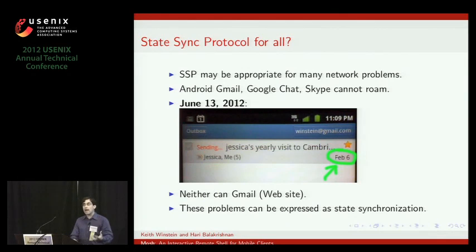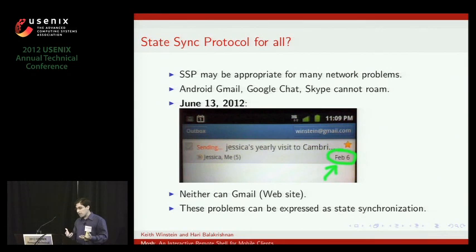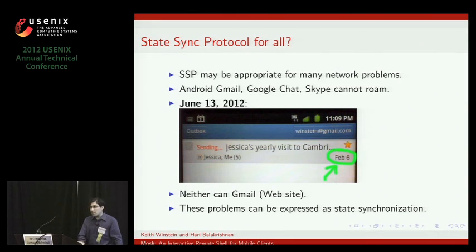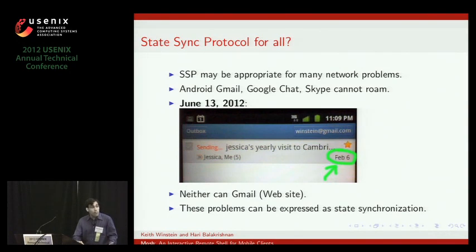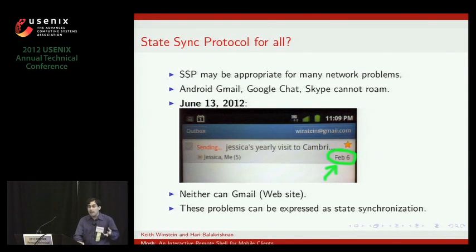So people seem to be really using it. But we think this is not just about a mobile shell protocol. This sort of paradigm of object synchronization we think is appropriate for other applications. Our program can roam, but even very well-funded applications for mobile devices, nominally intended for mobility, are not mobile. Android Gmail, Google Chat, Skype, Gmail the website — all of these things will break without even disclosing it when you roam. That's just ridiculous.